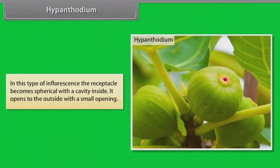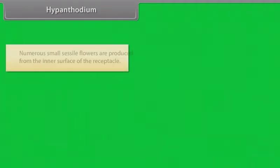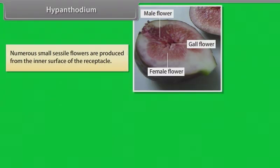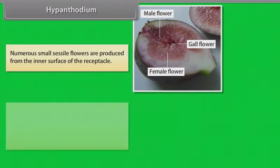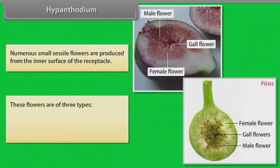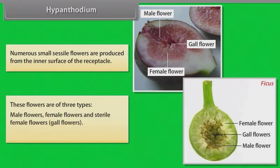In Hypanthodium, the receptacle becomes spherical with a cavity inside. It opens to the outside with a small opening. Numerous small sessile flowers are produced from the inner surface of the receptacle. These flowers are of three types: male flowers, female flowers, and sterile female flowers (gall flowers). Example: Ficus.